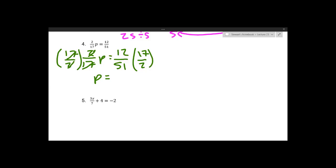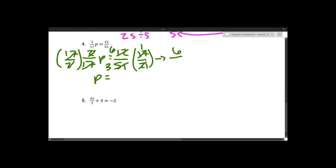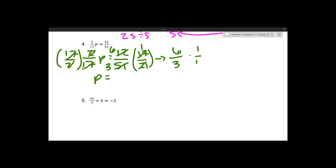On the right side we cross-cancel: 2 is a factor of 12, so those cancel and 12 divided by 2 is 6. 17 is a factor of 51, so those cancel and 51 divided by 17 is 3. We're left with 6 over 3 times 1 over 1, which is 6 over 3, which equals 2. So p equals 2.